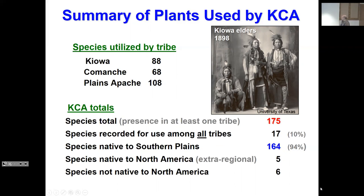Looking at the totals: species present in at least one tribe — about 175. Species recorded for use among all three tribes: only 17 of those are reported in all three. A lot of this data only appears in one survey. Most of these are native to the Southern Plains — 94%, or 164 species. Five were native to North America but found outside the region, mostly through trading. There were also six exotic species not native at all.